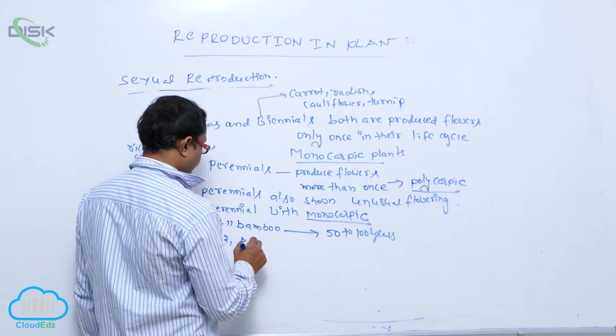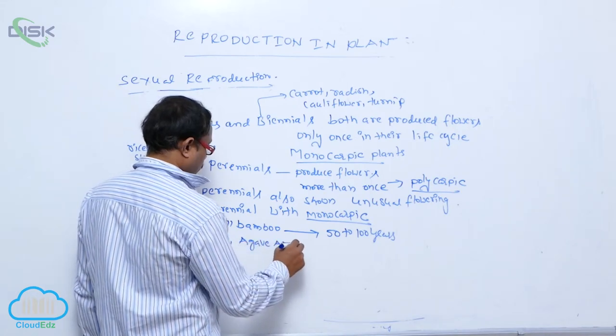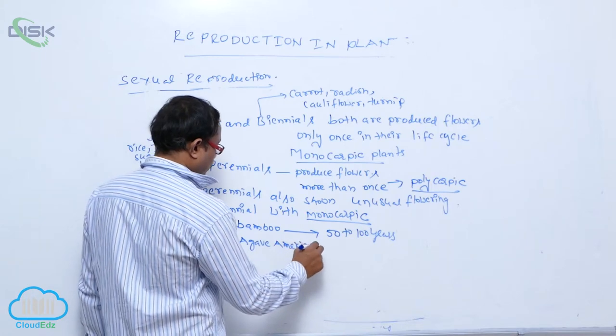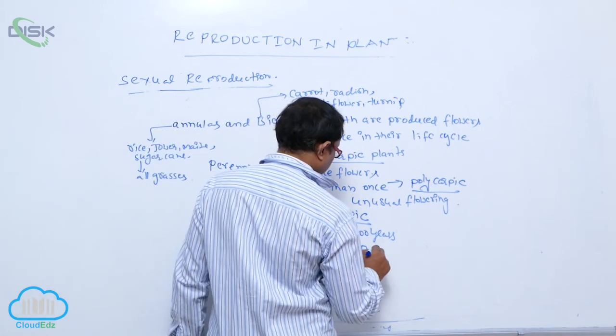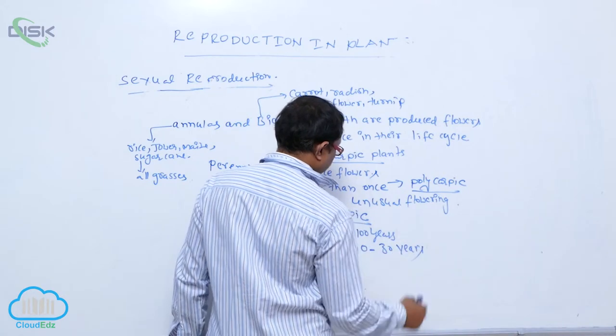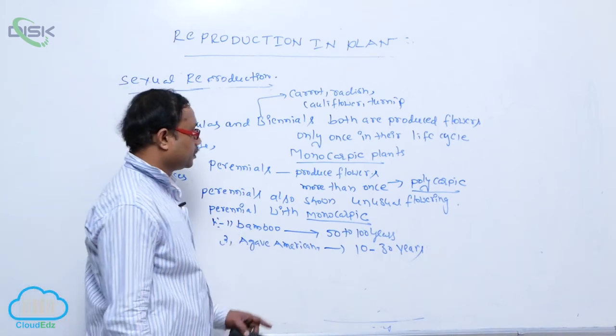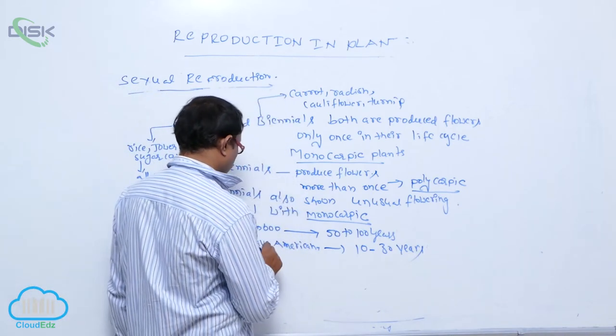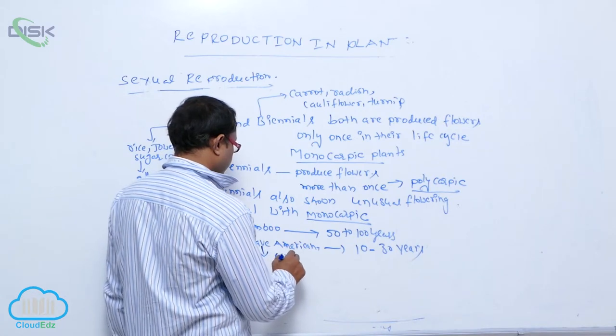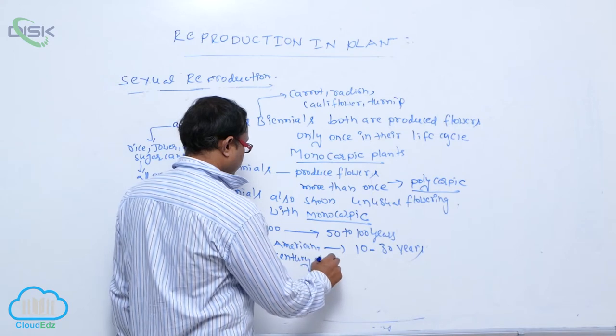After that, Agave americana plant. It produces flowers in the life cycle 10 to 13 years. It produces large numbers of flowers and fruits and after that it dies. This agave americana plant is also described as century plant.